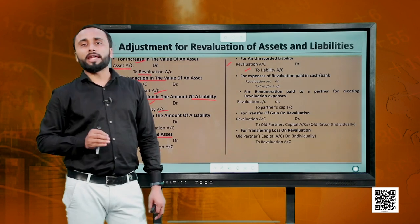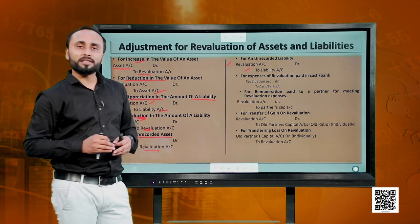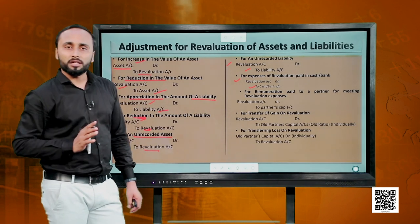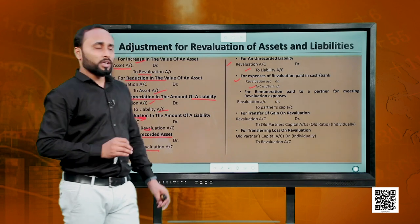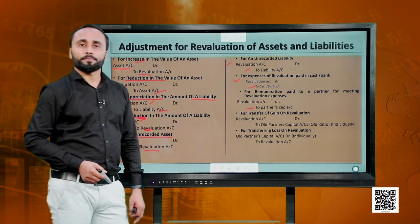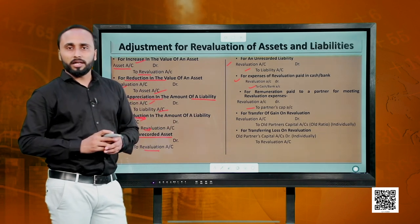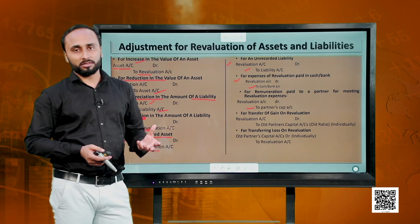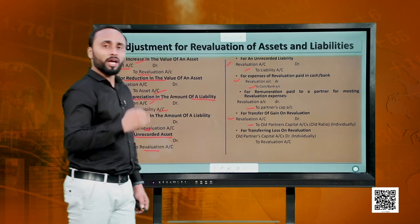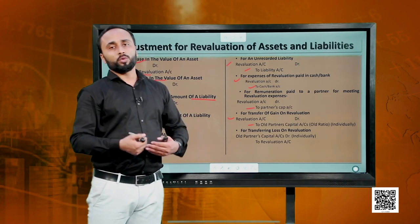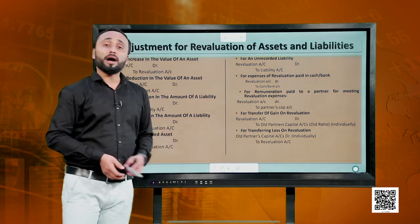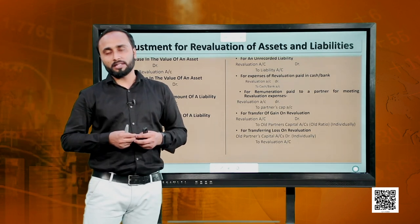Sometimes there might be an expense incurred for revaluing the assets and liabilities. That expense is debited to the revaluation account. If the firm is paying through cash or bank, we credit the cash or bank account; if a partner is paying that expense, we credit the partner's account. Having done all these adjustments, we find the gain or loss. If there is a gain, we debit the revaluation account and credit all partners individually in their old ratio. If there is a loss, we do the opposite.